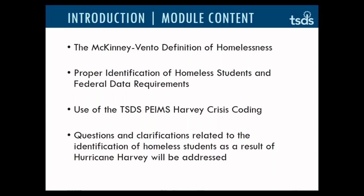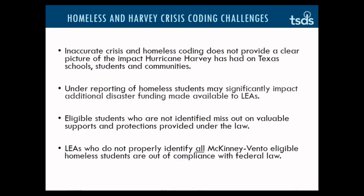This is problematic for a number of reasons. Inaccurate crisis and homeless coding does not provide a clear picture of the impact Hurricane Harvey has had on Texas schools, students, and communities. Specifically, the under-reporting of homeless students may impact additional disaster funding made available to LEAs. Historically, the U.S. Department of Education provided resources to states or LEAs based on the numbers of students who were identified as homeless.